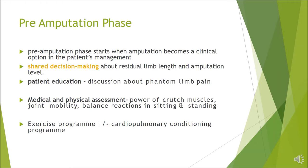In the pre-amputation phase, multidisciplinary rehab involvement is important. This phase starts when amputation becomes a clinical option. Amputation should be a shared decision with discussion about residual limb length and amputation level to gain better rehabilitation outcomes. Patient education is extremely important, especially about phantom limb pain. Medical and physical assessment includes power of crutch muscles, joint mobility, and balance reactions in sitting and standing, as these are crucial for future function. This should be followed by an exercise program to maintain and improve muscle strength, plus or minus cardiopulmonary conditioning.